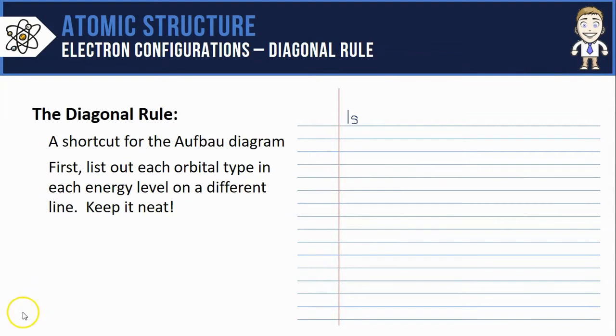Beneath that, you'll do the second energy level and all the orbitals in the second energy level. That repeats with a 2s, but then we add a new one each time. The second energy level introduces the 2p's.